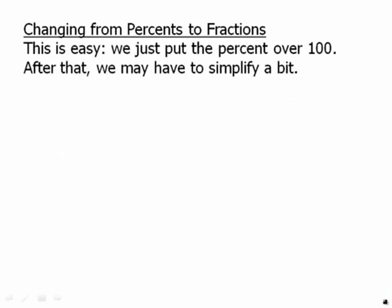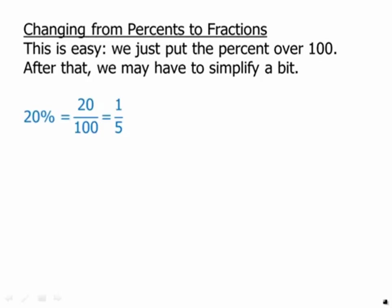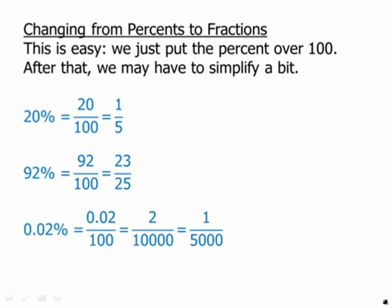Changing from percents to fractions. This is easy — we just have to put the percent over one hundred, and after that we may have to simplify a bit. For example, twenty percent is twenty over one hundred, which is one-fifth. Ninety-two percent is ninety-two over a hundred, which is twenty-three over twenty-five. Point-oh-two percent is point-oh-two over one hundred, or two over ten thousand, and that simplifies to one over five thousand. So all three of them very easily become fractions.